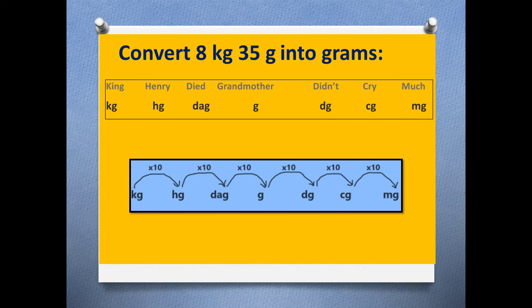Now here you see we want to go from kilograms to grams. Kilogram is here and grams is there. So we jump one, two, three times. So one kilogram has 10 into 10 into 10 grams, that is 1000 grams.